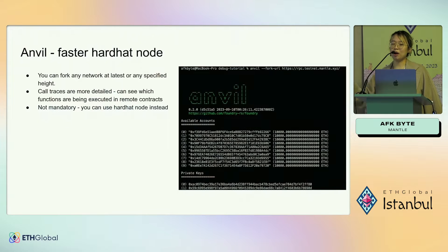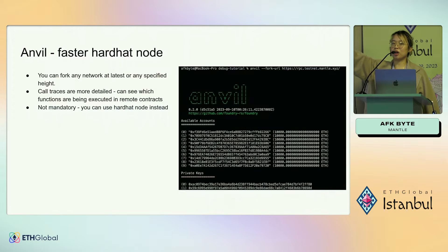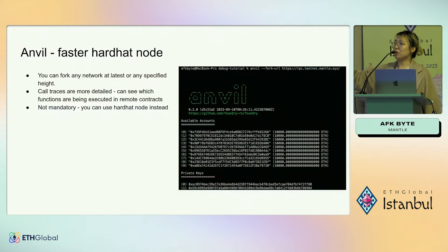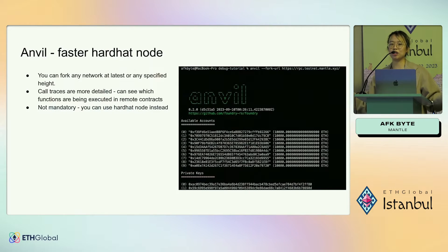If you want an additional argument, you can add '--block-height' and specify the exact block you want to fork at. Note that forking further back requires an archive node. For Mantle, our testnet RPC URL is an archive node, so you can pull arbitrary state from however many blocks back you want. When testing on a fork of mainnet, your call traces are more detailed — you can see what functions are being executed by your contract call, even in remote contracts.